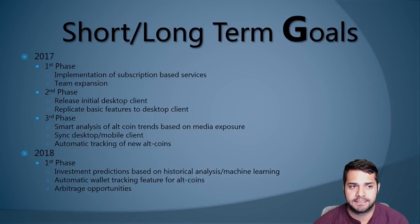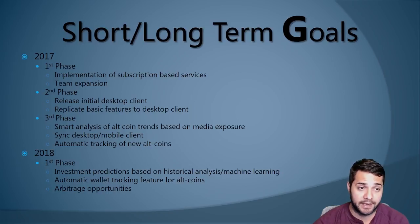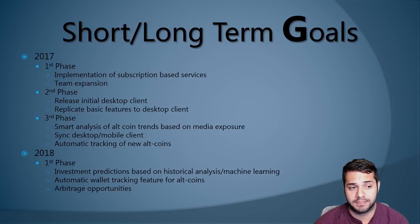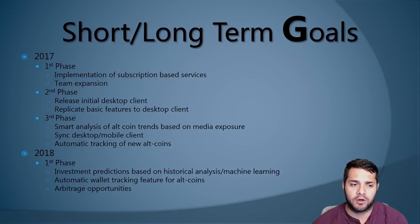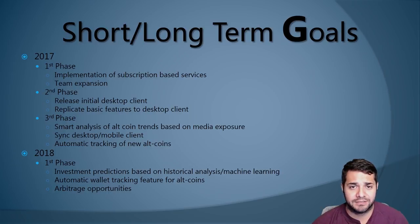Now their short and long-term goals. First phase of 2017: they need to implement subscription-based services and add one more person — a UI/UX designer. Second phase of 2017: they're going to release the desktop client, with all attention moved to this right now, and replicate basic features from the mobile app to the desktop. Phase 3 of 2017: they're going to add smart analysis of altcoin trends based on media exposure, sync their mobile app to their desktop client, and implement automatic tracking of altcoins. Then moving to 2018: investment predictions based on historical analysis and machine learning, automatic wallet tracking for altcoins, and arbitrage opportunities. It's super nice to see they launched their mobile app already and are concentrating on their desktop app.